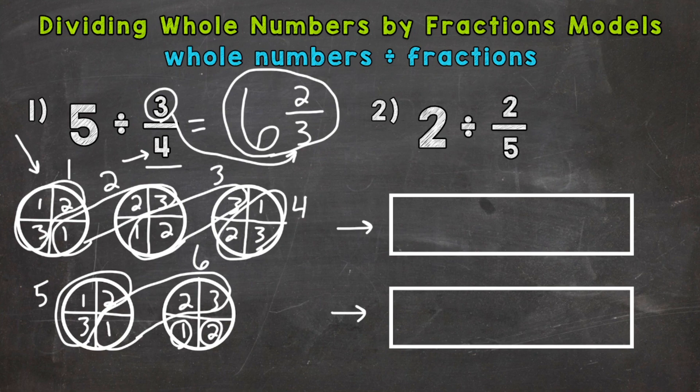So the first thing we need to do after we have those 2 wholes is cut into fifths. So 1, 2, 3, 4, 5. 1, 2, 3, 4, 5.